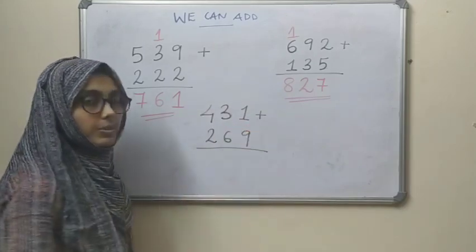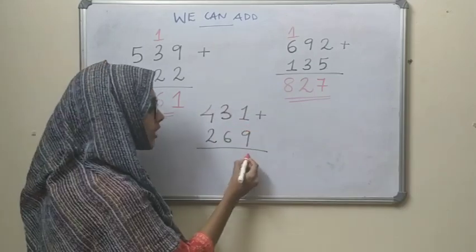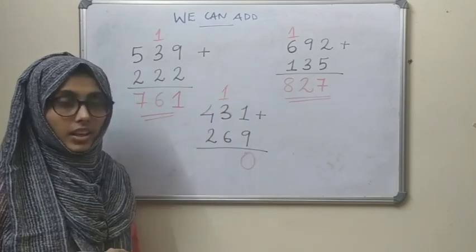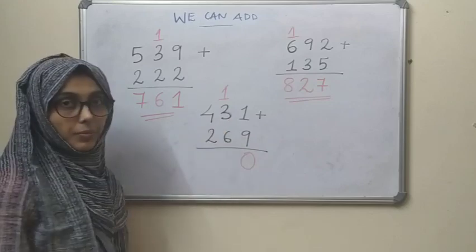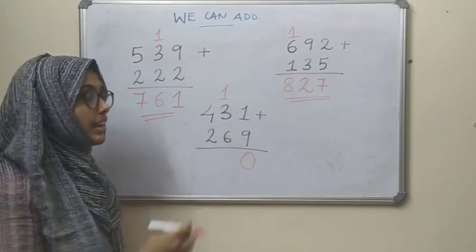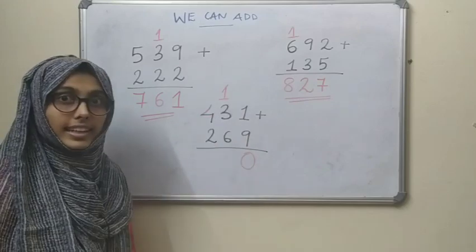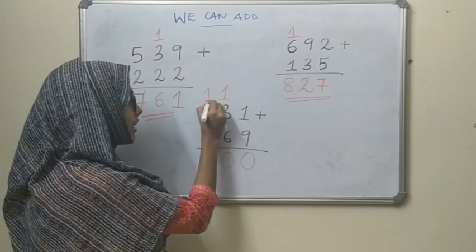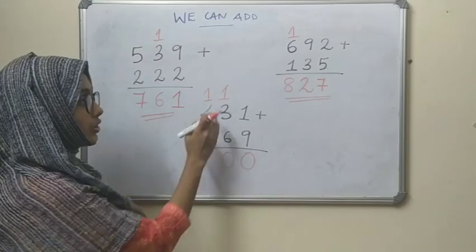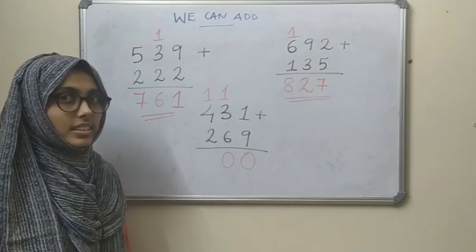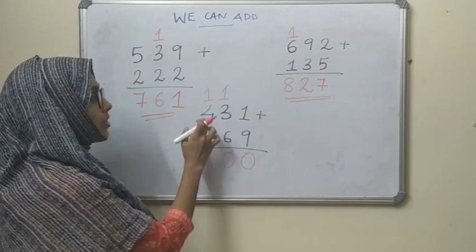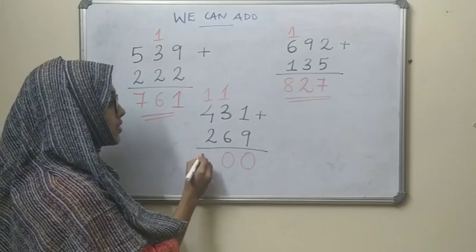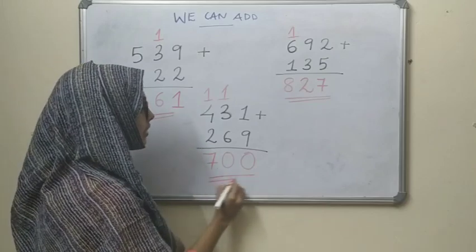Third type: 9 plus 1 is 10 — write 0 here and carry 1. Now 6 plus 3 is 9, plus 1 is 10 — write 0 and carry 1 again. So we can see 1 is carried two times. Then 4 plus 1 is 5, and 5 plus 2 is 7. The answer is 700.